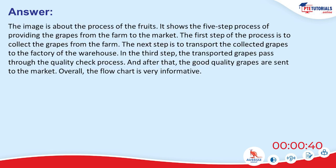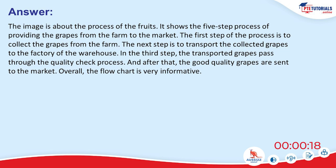The image is about the process of providing fruits. It shows a five-step process of providing grapes from the farm to the market. The first step is to collect the grapes from the farm. The next step is to transport the collected grapes to the factory or warehouse. In the third step, the transported grapes pass through a quality check process. After that, the good quality grapes are sent to the market.